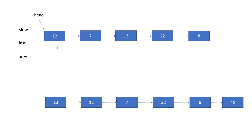We will use the algorithm for finding the middle node that we have already explained in our previous tutorials. To find the middle node, we will use two pointers — slow and fast. We will jump slow by one position and fast by two positions, and we will check until fast.next is not null. This will ensure that the slow pointer is at the middle position.